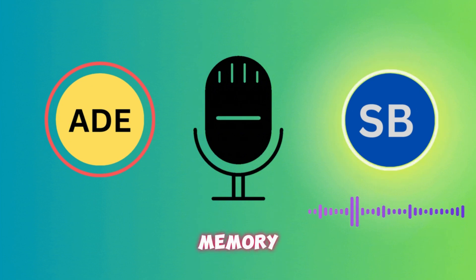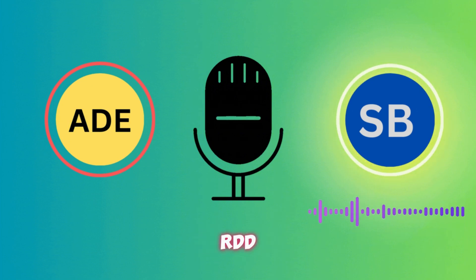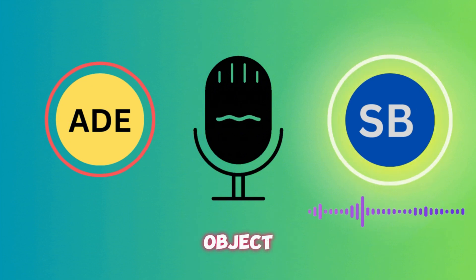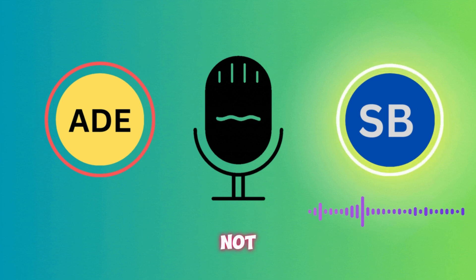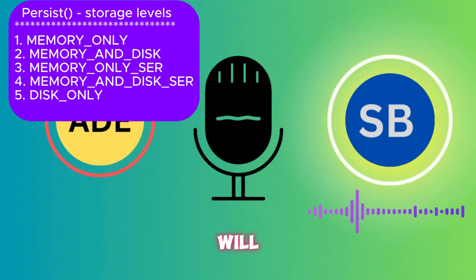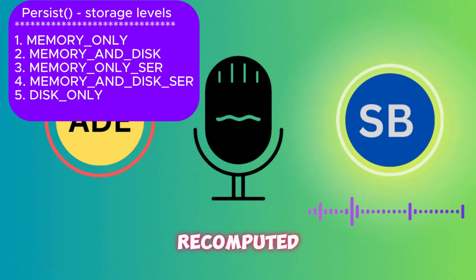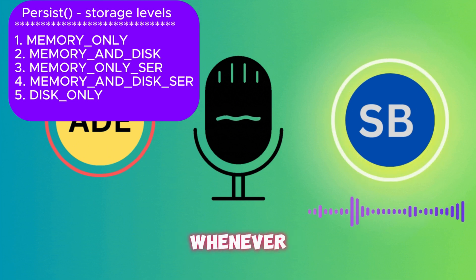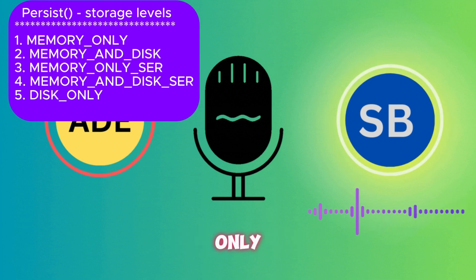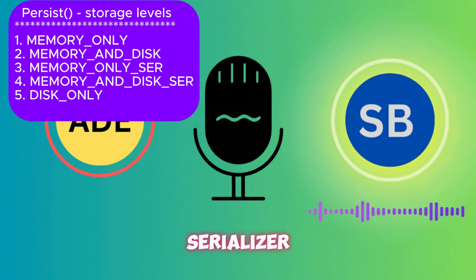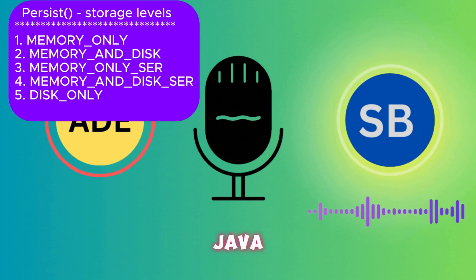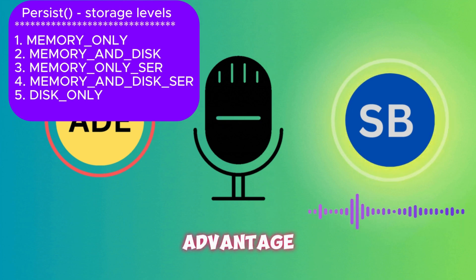The first storage level is MEMORY_ONLY, which stores the RDD as deserialized Java objects in the JVM. If the RDD does not fit in memory, some partitions will not be cached and will be recomputed whenever required.